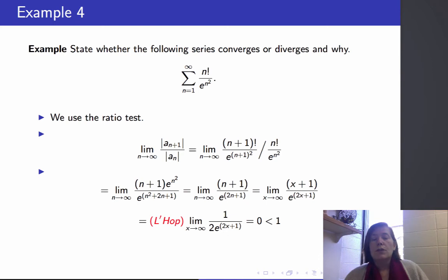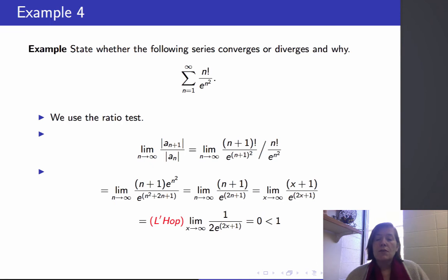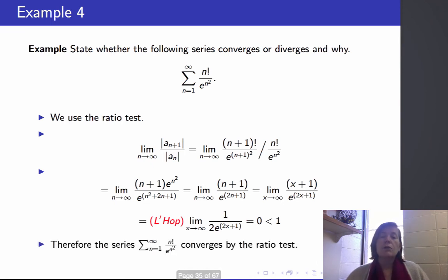We should expect this limit to be zero because exponential growth always beats polynomial growth. But if unsure, you can substitute x and use L'Hôpital's rule, giving the limit as x goes to infinity of 1 / (2e^{2x+1}), which is 0. Since this is less than 1, we conclude that this series converges by the ratio test.